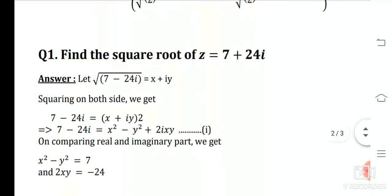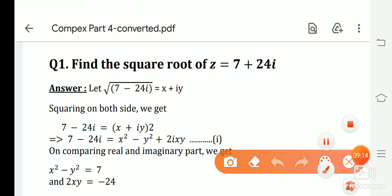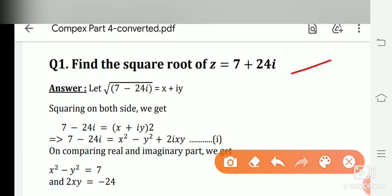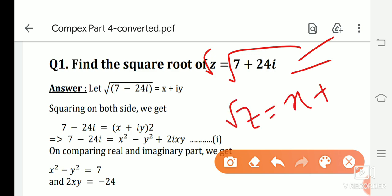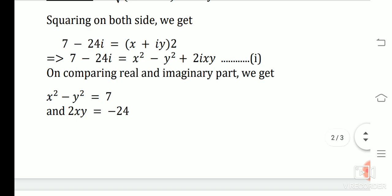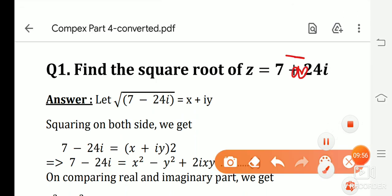Now we will solve one example to make the concept clearer. Find the square root of z = 7 − 24i. So we have to find √(7 − 24i). Let √(7 − 24i) = x + iy.